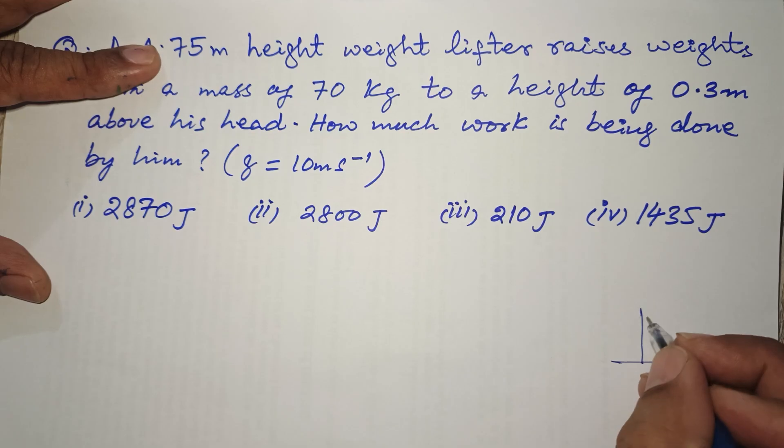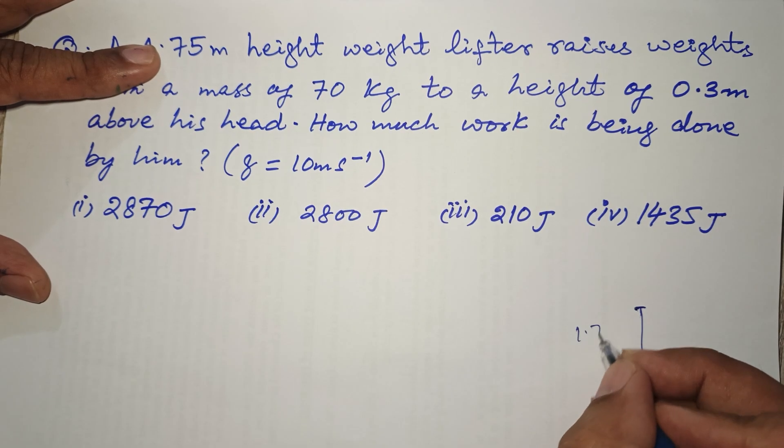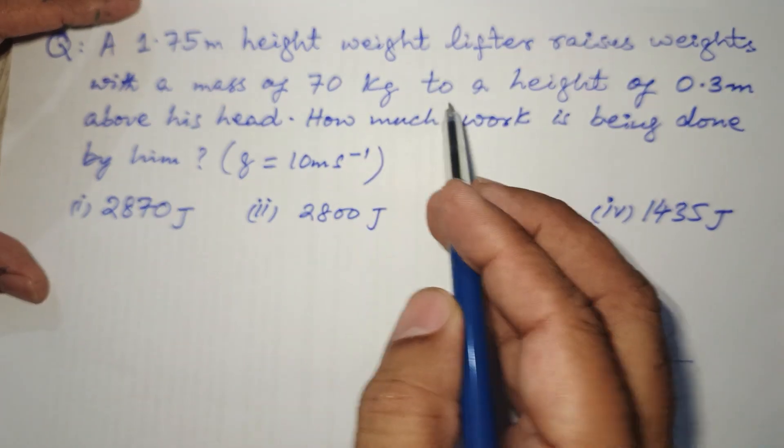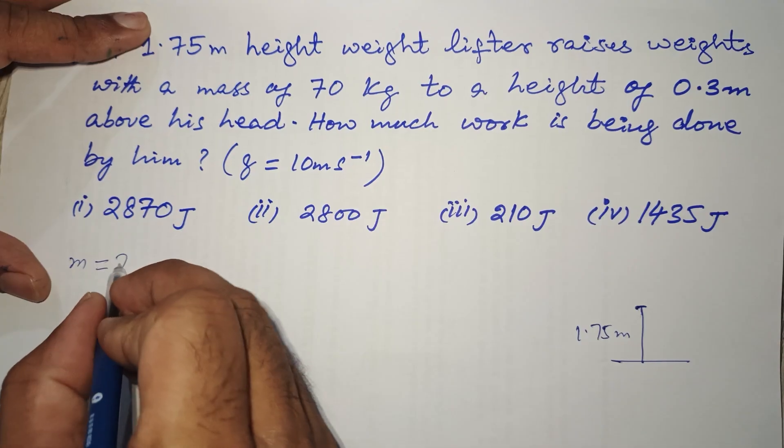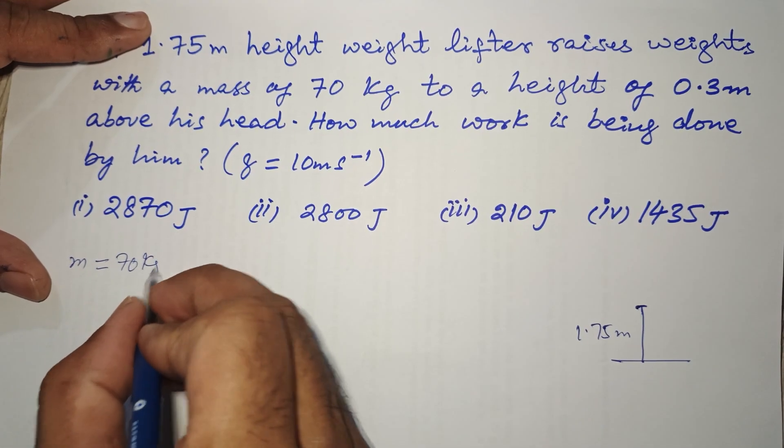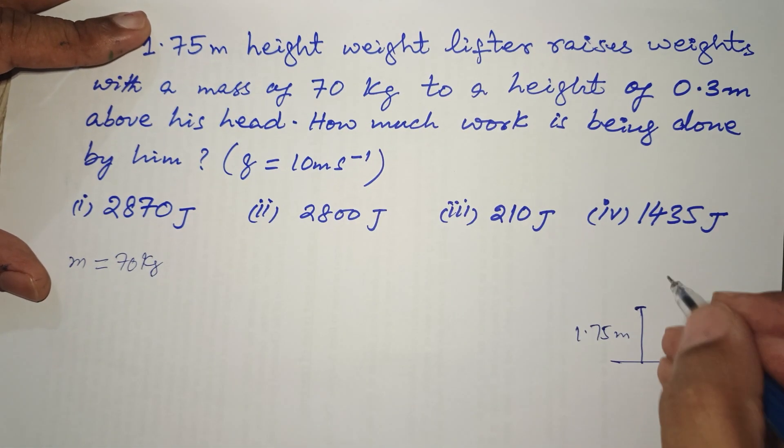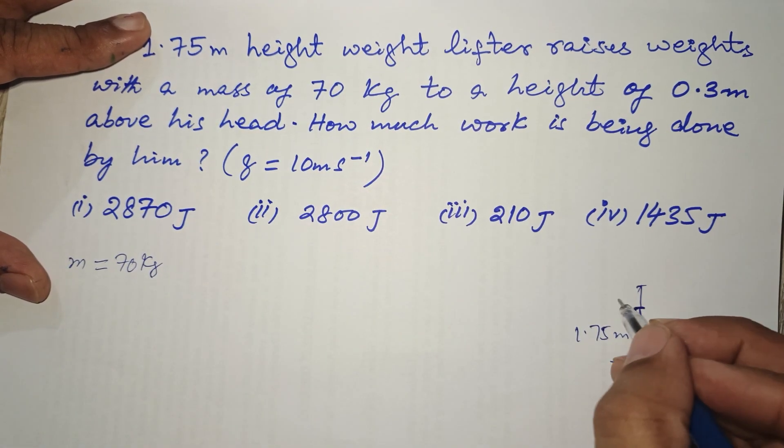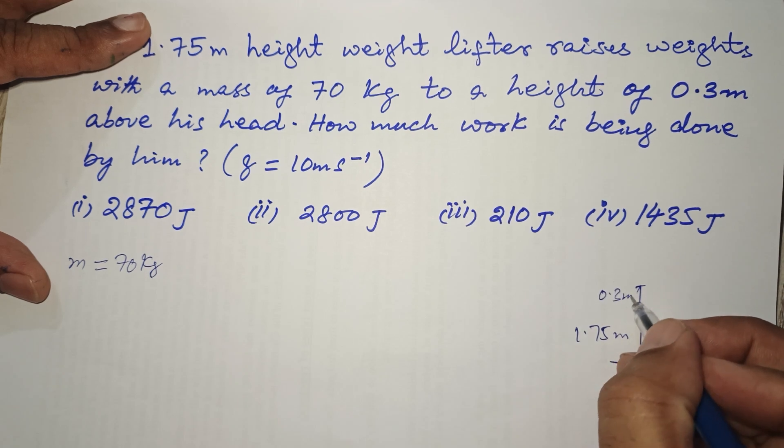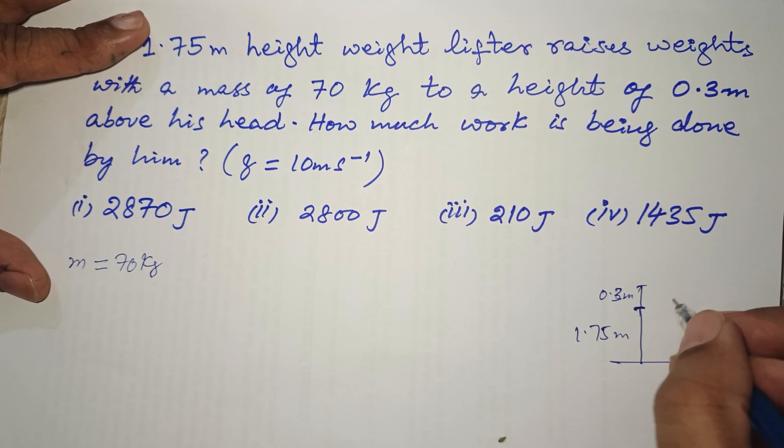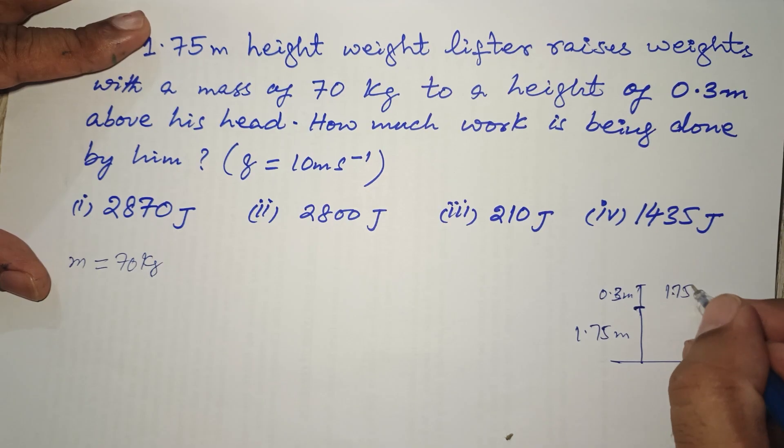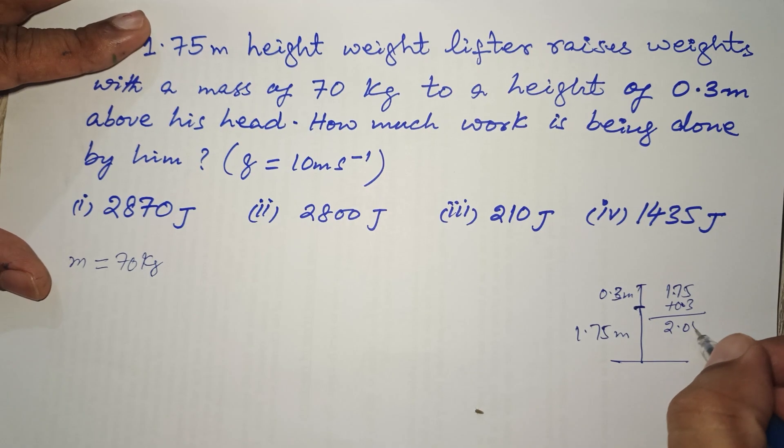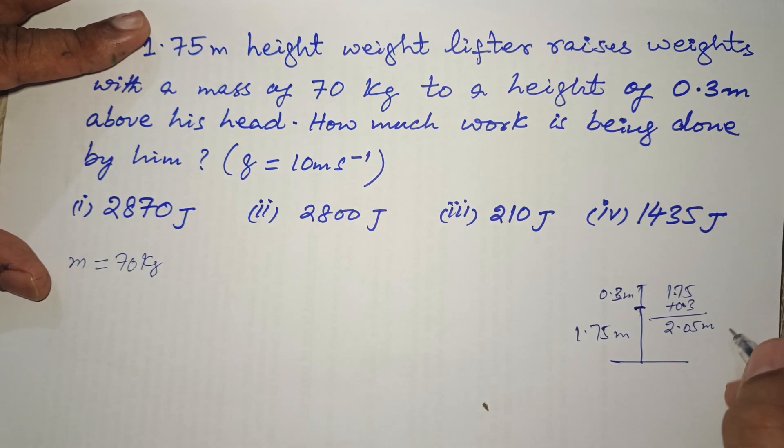The height of the weight lifter is 1.75 meters. He raises weights with a mass of 70 kg to a height of 0.3 meters above his head. So actually he raises the weight a total of 1.75 plus 0.3, which is 2.05 meters. This is the height.